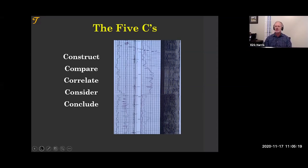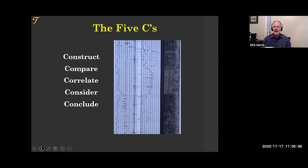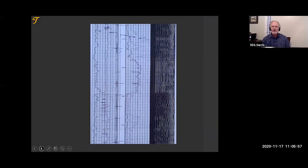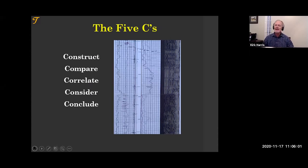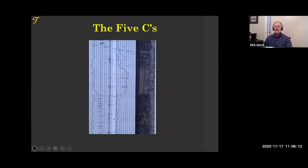Then we're going to compare log sections — we look up and down the log, focusing not on the amplitude curve but on the variable density log. We will correlate and look side to side: why did the change occur? We will consider what might be going on in the well bore that may be affecting our log. And then we'll conclude with how this cement job actually ended up.